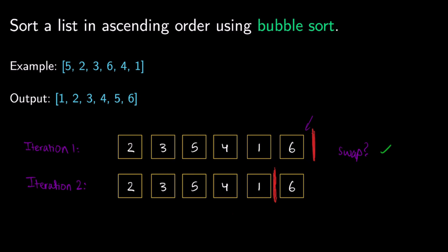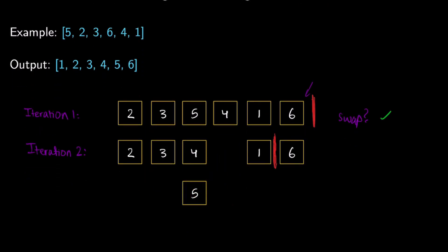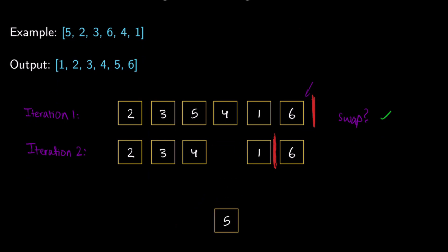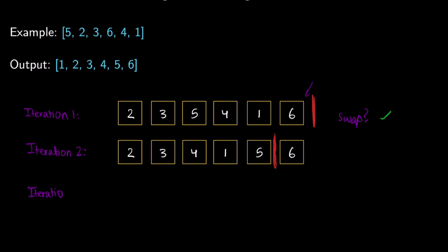So 2 and 3: 2 is less than 3, keep it. 3 and 5: keep both. 5 and 4: 5 is greater than 4, so we swap those. Now 5 and 1: 5 is greater than 1, so we swap those too. Again we can see that the second-to-last element is now in its correct place. We did swap, so we continue to iteration 3.